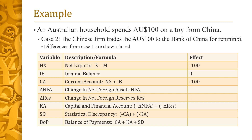In case 2, rather than buying a share of ANZ, the Chinese firm trades the $100 to the Bank of China for renminbi. This change has no effect on NX, IB, or CA. However, as the Chinese firm no longer acquires a share of ANZ, delta NFA is now zero. And as the Bank of China adds $100 Australian to its foreign reserves, Australia's net foreign reserves RES now fall by $100. Since the increase in delta NFA vis-à-vis case 1 is exactly offset by the fall in delta RES, KA is unchanged at $100. Since CA is also unchanged, SD is still zero and BOP is also zero.